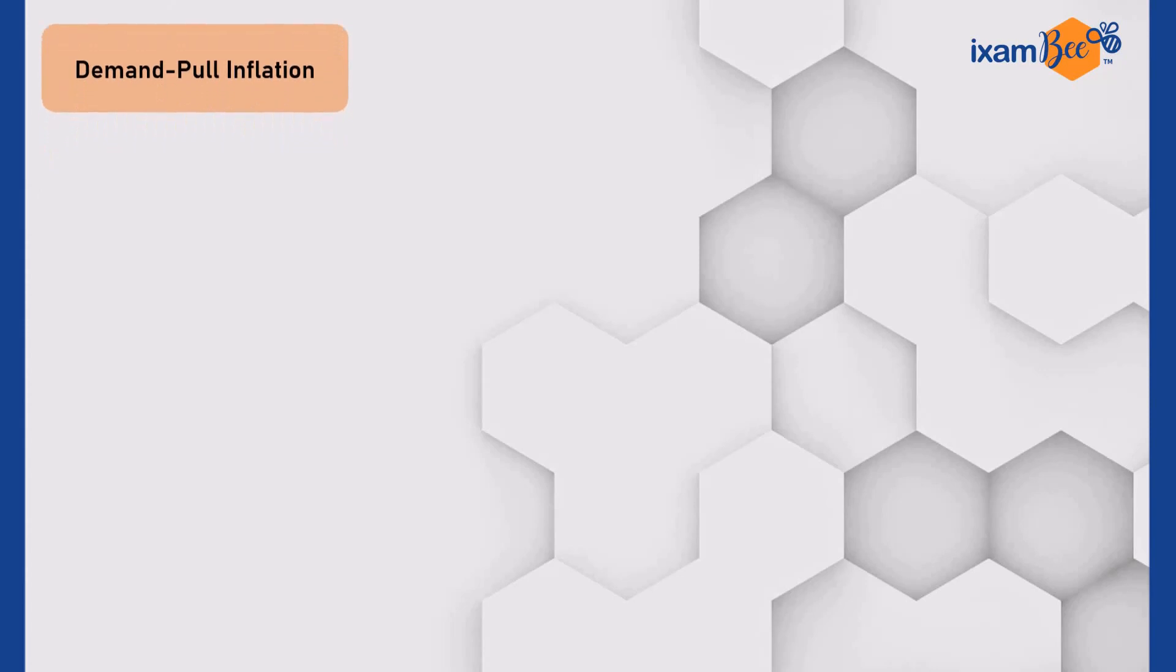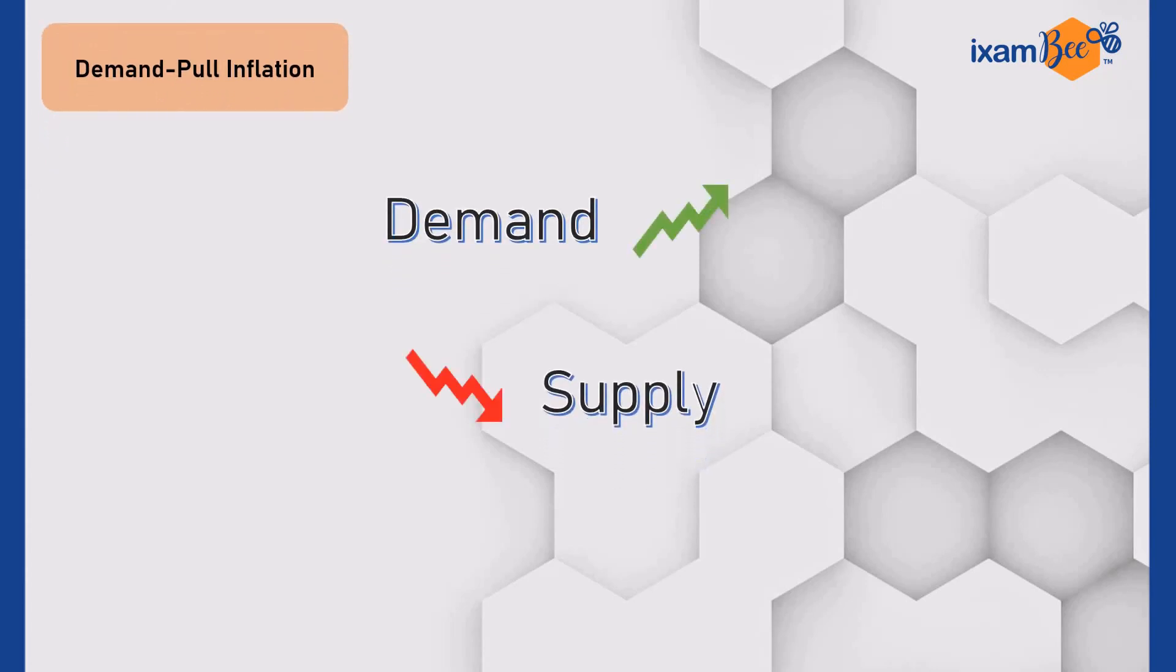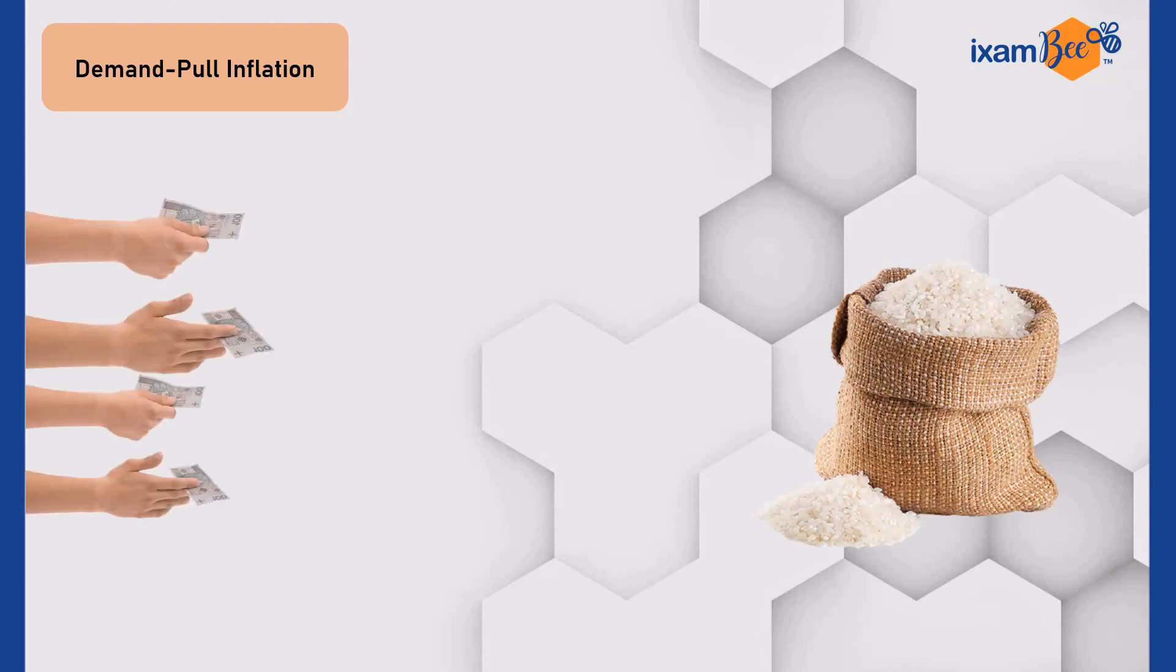First, demand-pull inflation. When there is high demand but lower supply of a good, the good becomes expensive or the price increases. For example, if the buyers of a bag of rice are many in the market but the quantity of rice is limited, the seller would increase the price to make that available to the highest bidder. This is inflation by higher demand.